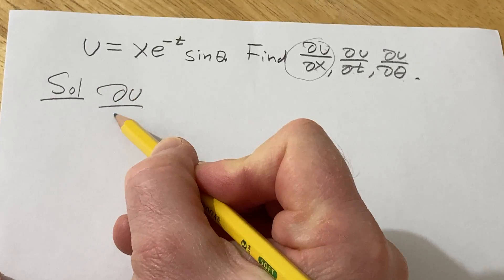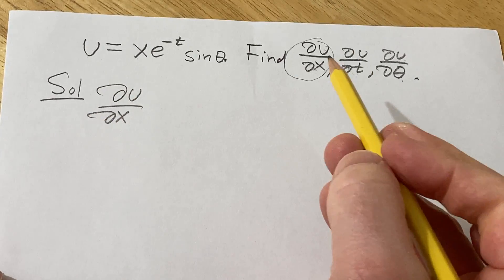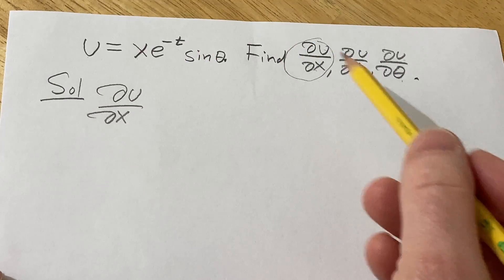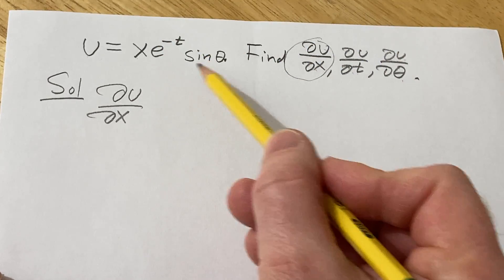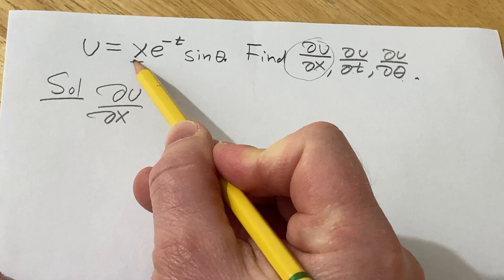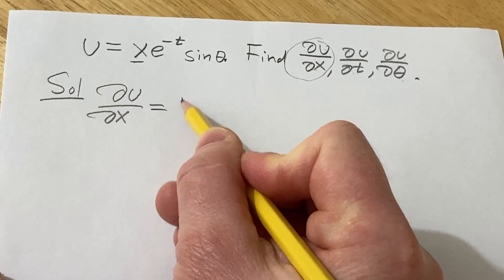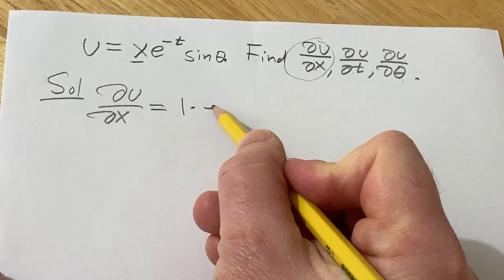So ∂u/∂x, so in this case we treat everything with t's and thetas as constants. So all of this here, we're treating it as a constant. So we're basically just differentiating the x, its derivative is 1, and the rest of it hangs out because it's a constant.